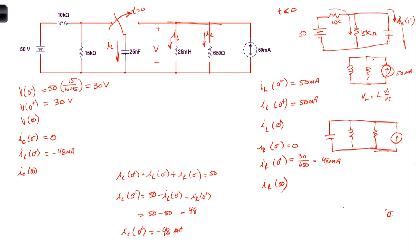All we have left is to determine the values as T approaches infinity. After a long period of time, the currents and voltages will become constant again. That means the current through the inductor is constant, so the voltage across it — V equals L times dI/dt — will be zero. The inductor acts as a short circuit, and the voltage across the entire parallel combination as T goes to infinity is going to be zero volts.